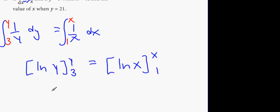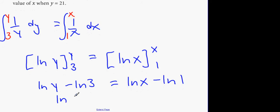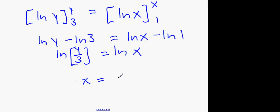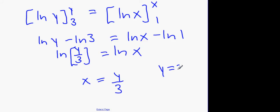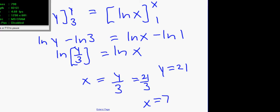Now, what we're going to get is LN y minus LN 3 equals LN x minus LN 1. What is LN 1? LN 1 is 0. LN(y/3) equals LN x. This therefore must mean x equals y over 3. The whole point of the question was find the value of x when y is 21. When y equals 21, x equals 21 over 3. X must equal 7.